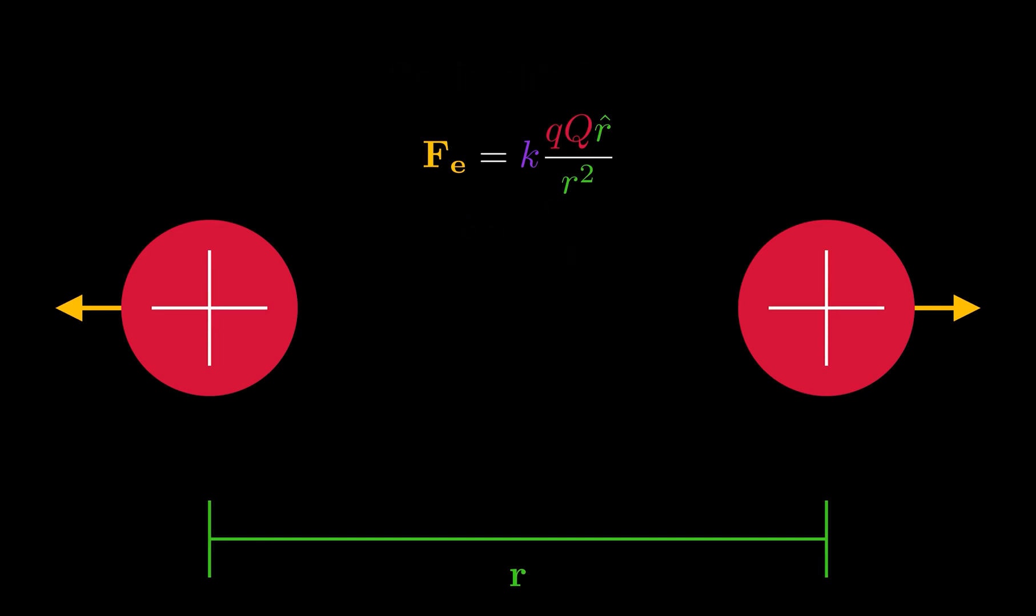For students of classical mechanics, this law should remind you of the universal law of gravitation, where the gravitational force between two objects is proportional to the product of the masses of the two objects divided by their distance squared. Such symmetries in physics are everywhere, but for now, let's get back to our charges.